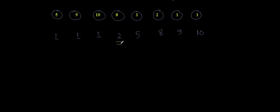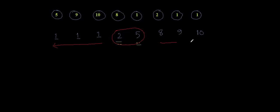If you consider 2, there are 3 data on one side and 4 on the other, so 2 is not the center. If I consider 5, there are 4 values on one side and 3 on the other. So there is no single value with equal data on both sides. But if I consider 2 and 5 together, there are 3 data on either side — 3 on the left and 3 on the right. So the central values are both 2 and 5.